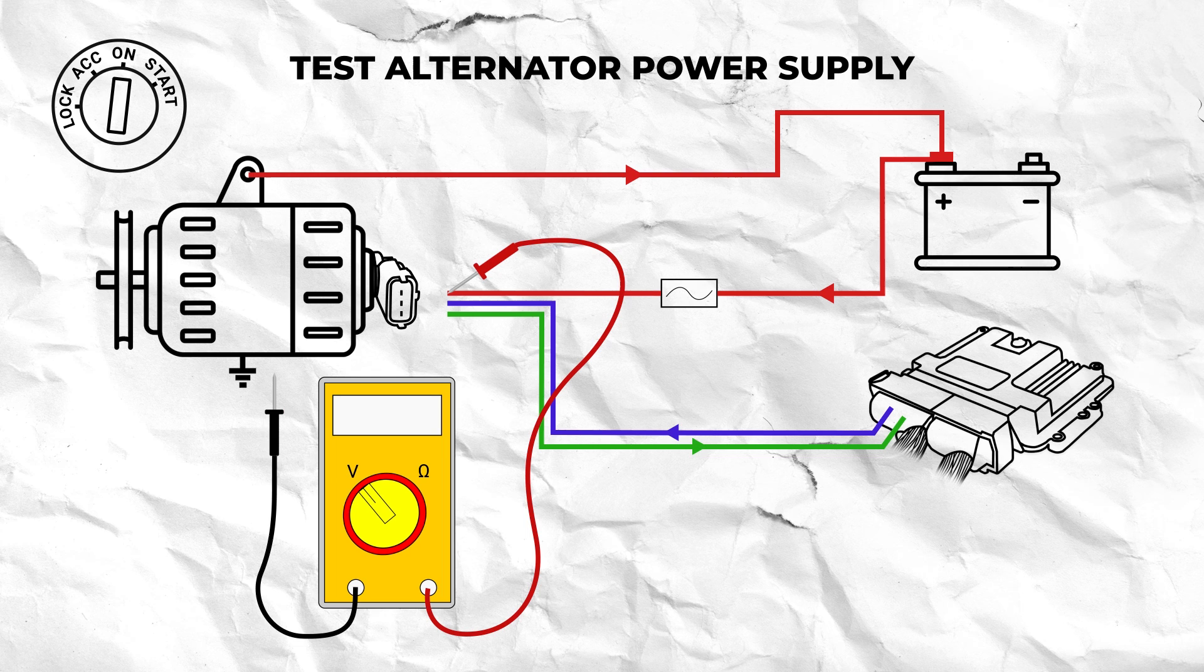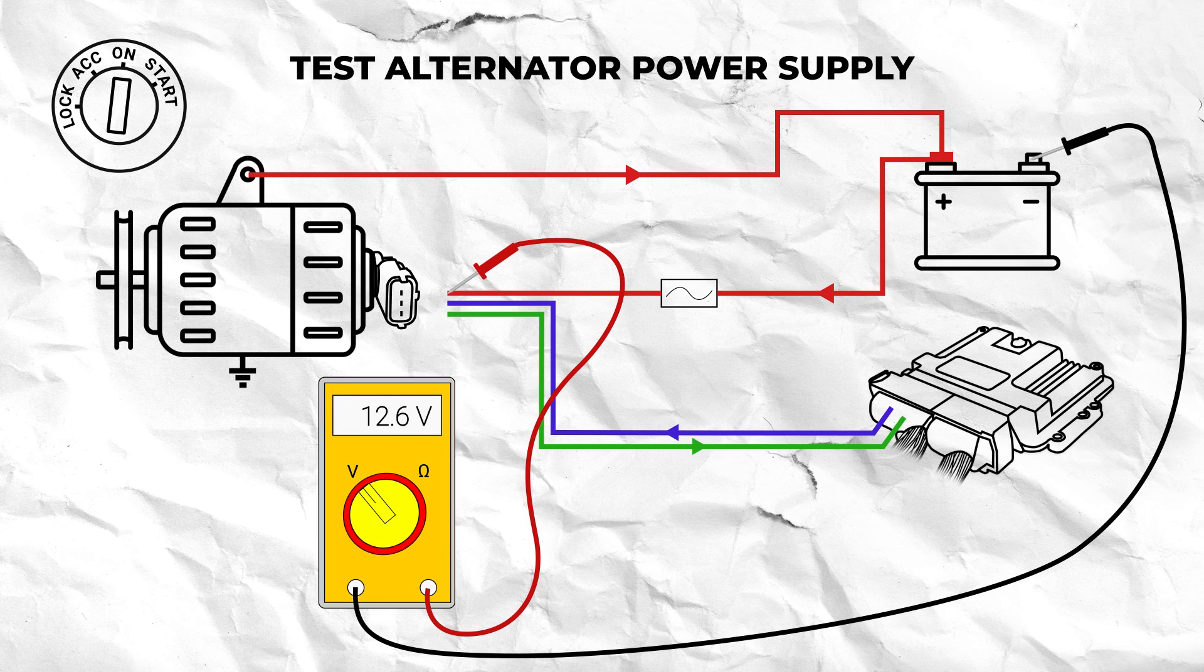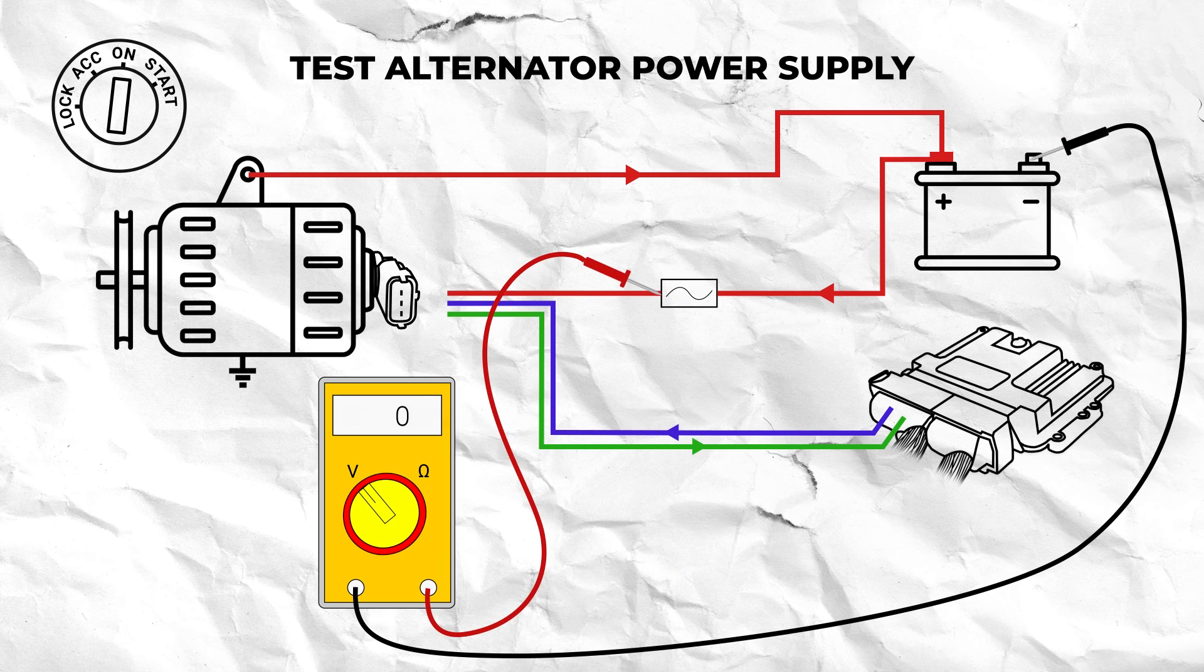Turn the ignition back on and probe at the high reference terminal and battery negative. The reading should be standard battery voltage of 12.6 volts. If you have low or no voltage here then check the voltage regulator fuse in the fuse box.